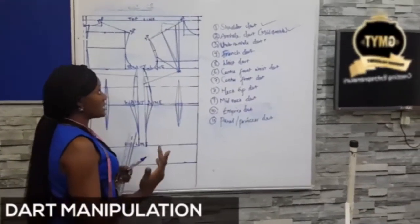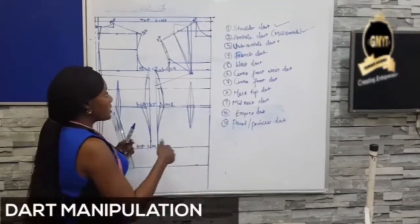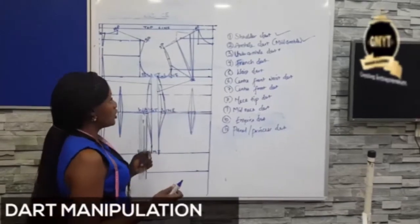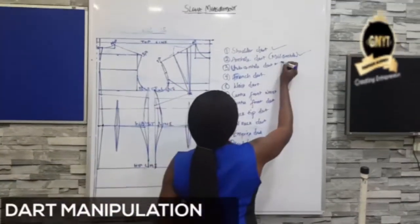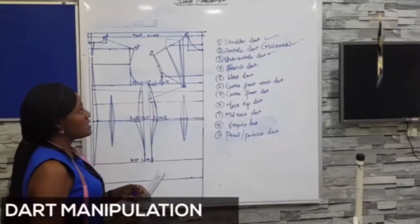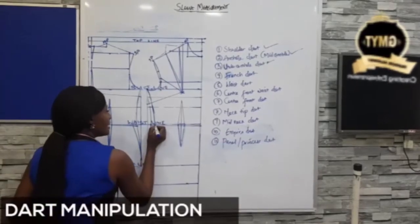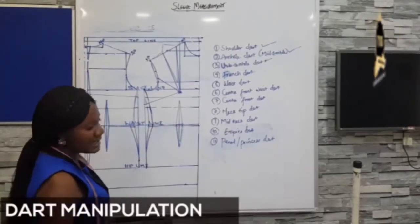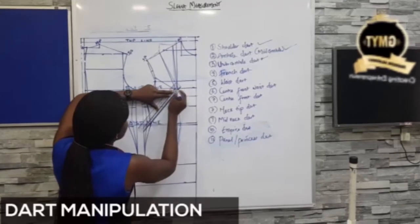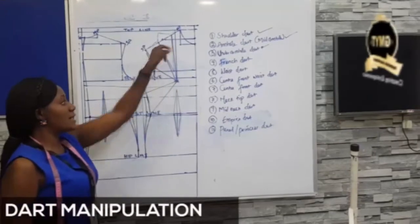Once you do it, the same procedures continue: close your shoulder dart, slash this open, place another paper, bring back 2 cm or 4 cm or 5 cm for adults, then rule your new dart legs — and that becomes your dart. That's all for the under-armhole dart. Next is my French dart. How do I get my French dart? My French dart comes from my waistline on the side. From my waistline, I rule a straight line to my point X. I have closed my shoulder dart, and the same procedure continues.